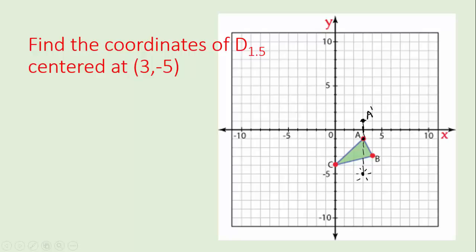Let's find B prime. The horizontal distance from the center over to B is one. One and a half times that is one and a half, so it's going to be lined up at four and a half on the x-axis. The vertical distance from the center to B is two units. One and a half times that is two plus one, which is three. Taking those two measurements together, B prime is right here.